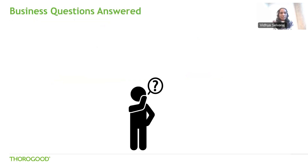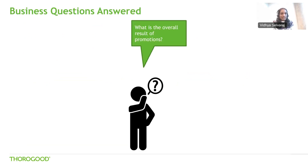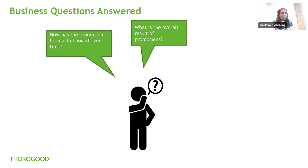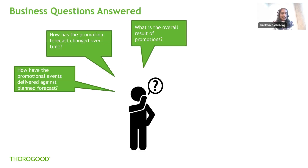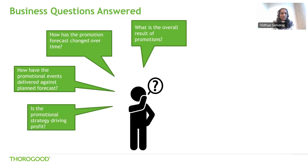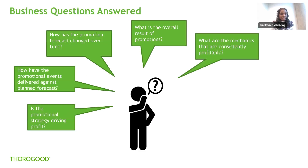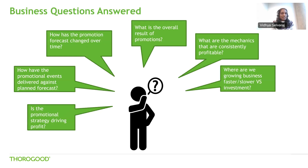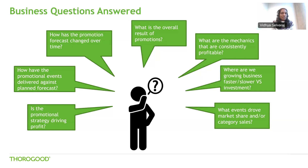The tool is customized based on the business questions it's supposed to answer. These include: What is the overall result of promotions? How has the promotion forecast changed over time? How have promotional events delivered against planned forecast? Is the promotional strategy driving profit? What are the mechanics that are consistently profitable? Are we growing business faster or slower versus the investment? What events drove market share or category sales? The tool has a set of dashboards that will help you get deeper insights into answering these questions and taking the right action to lead your business forward.